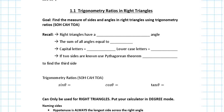All right, so we're going to start with trigonometry in right angle triangles. The goal for today's lesson is to be able to find the measure of sides and angles in right triangles using trig ratios, or SOHCAHTOA. Just get used to the word trigonometric ratios.